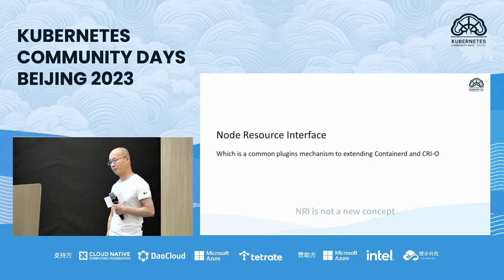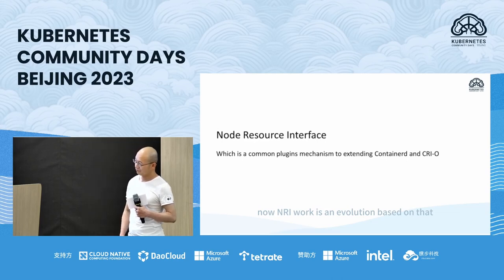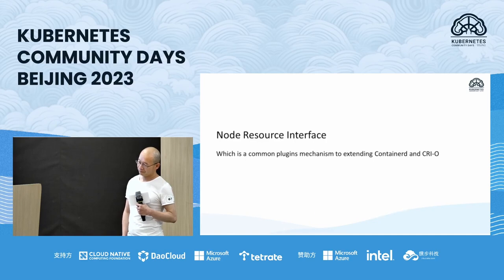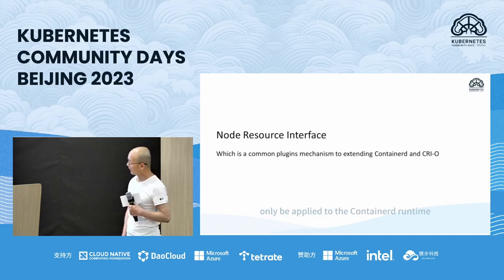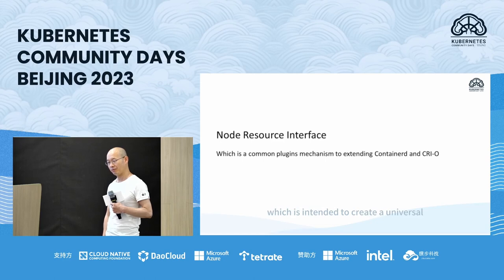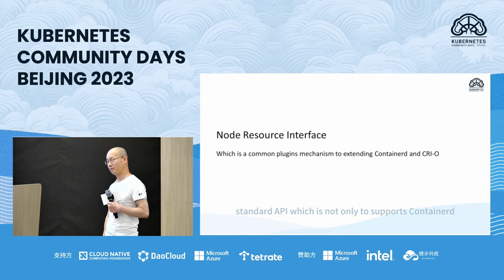NRI is not a new concept — it is a sub-project of containerd. The current NRI work is an evolution based on that. The original design and implementation of NRI v1 were contributed by Apple, but the functionality was very limited and its scalability was not very good, because it could only be applied to the containerd runtime. However, its design and innovation are quite good. So the NRI work I mention here refers to NRI v2, which is intended to create a universal runtime extension standard API supporting both containerd and CRIO.